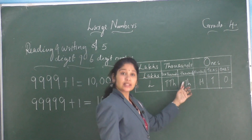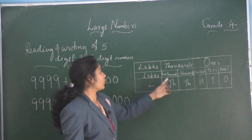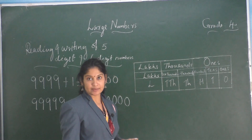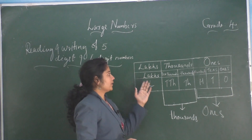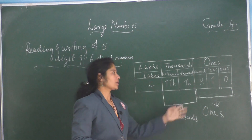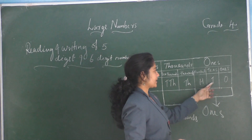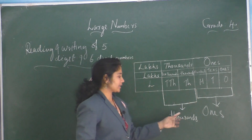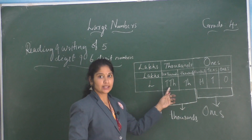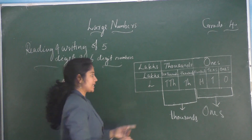Children, last year we learned ones place, tens place, hundreds place, and thousands place. In five digit numbers, one more place value is added — that is ten thousands. The place value chart of five digit numbers is divided into ones place and thousands place. Ones place belongs to ones, tens, and hundreds. Thousands place belongs to thousands and ten thousands. For six digit numbers, we have one more place value, that is lakhs.